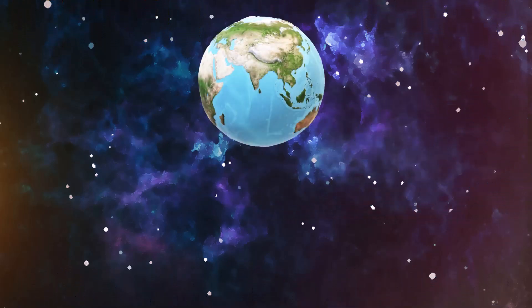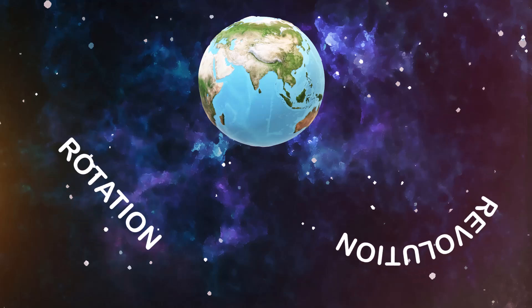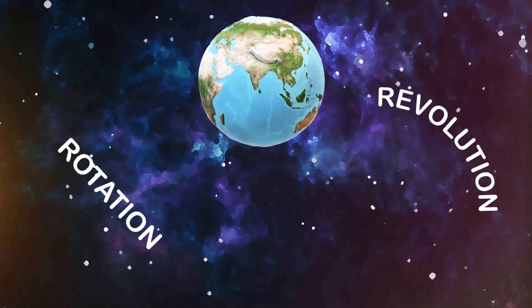The earth moves in two ways. Rotation, where it spins around like a top. And revolution, when it goes around the sun.